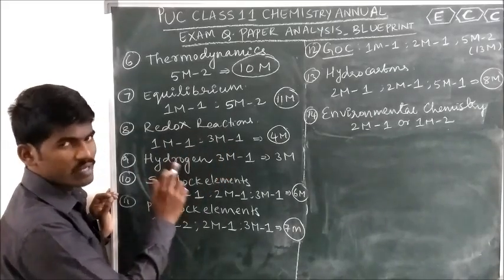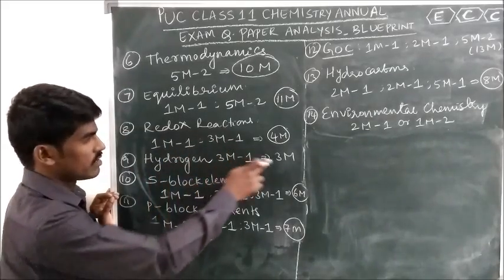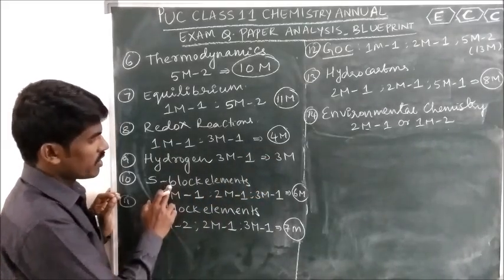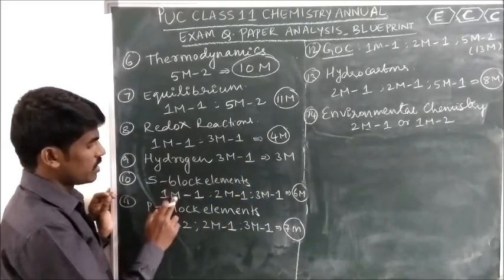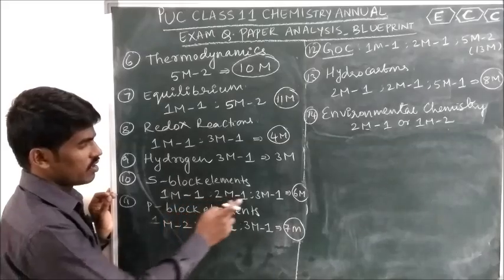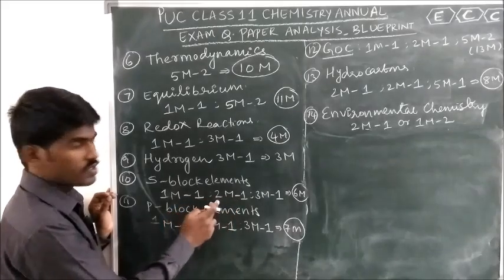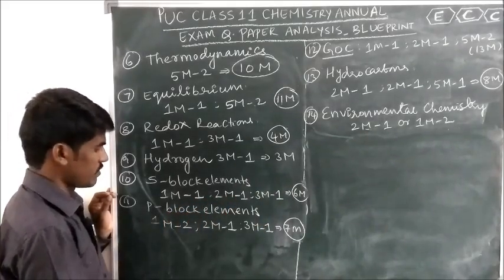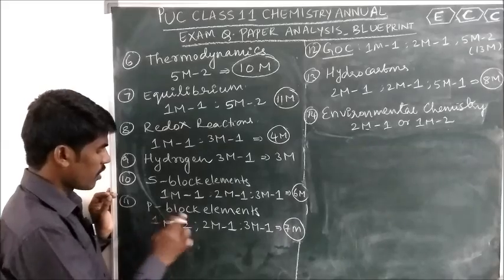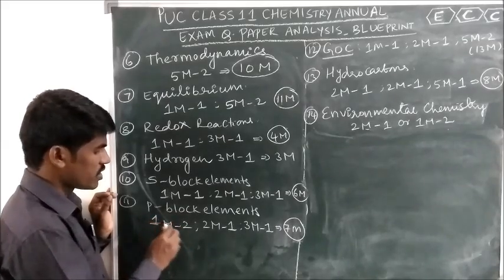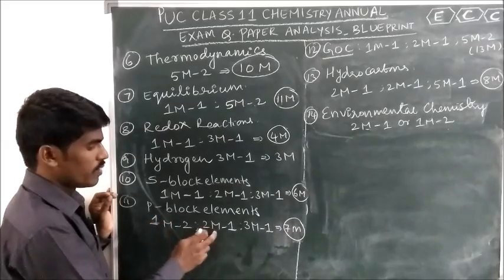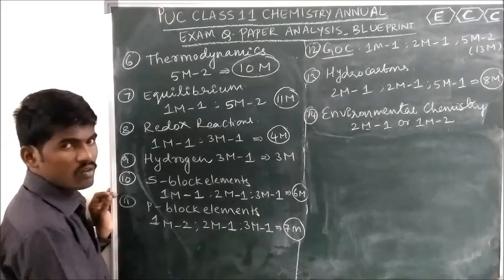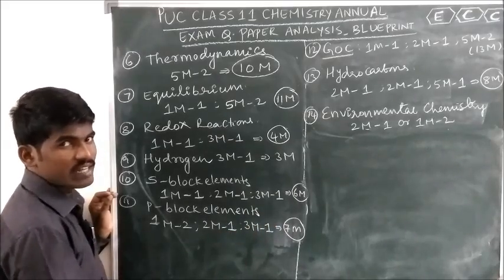Hydrogen and its Compounds has a weightage of 3 marks — you will get 1 three-mark question. S-Block Elements gives 1 one-mark question, 1 two-mark question, and 1 three-mark question. Total weightage is 6 marks. P-Block Elements gives 2 one-mark questions, 1 two-mark question, and 1 three-mark question. Total weightage is 7 marks.